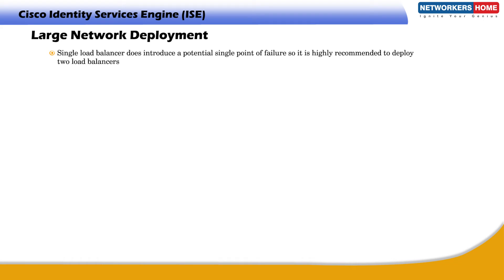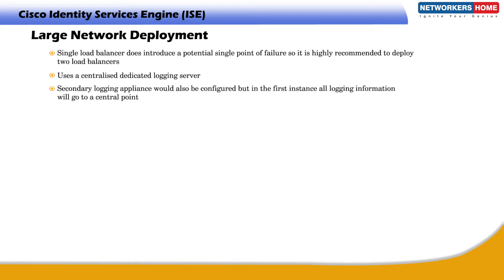Having a single load balancer does introduce a potential single point of failure, so it is highly recommended to deploy two load balancers. The large network deployment also uses a centralized dedicated logging server — one node set up specifically for logging, typically an appliance with a lot of disk space. A secondary logging appliance is also configured. With a large network deployment, you have a dedicated primary PAN and dedicated secondary PAN, a primary and secondary MNT, with all logging going to the primary monitoring appliance. The number of PSN nodes is scaled out depending on the number of devices on the network.